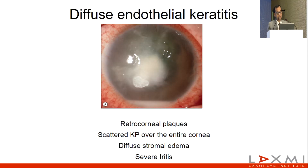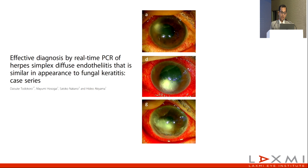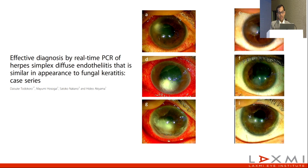Diffuse endothelial keratitis presents with retrocorneal plaques, scattered KPs, diffuse stromal edema, and severe uveitis. It is a great masquerader, and the key differential diagnosis is fungal keratitis. A paper by Todokoro et al. showed how an entity mimicking fungal keratitis was treated for fungal keratitis without response. Subsequently, real-time PCR testing for HSV came back positive, and treatment on those lines showed quite good results.